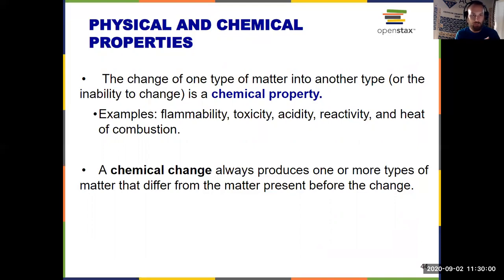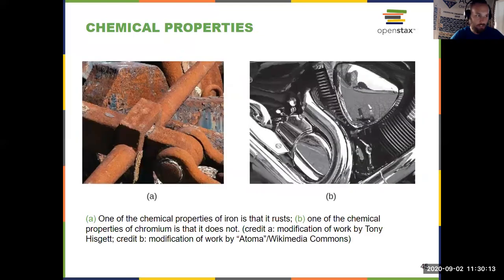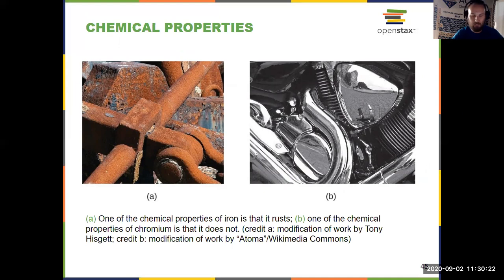For a chemical property, always think to yourself: is there a chemical change? Because that's going to produce some type of matter that's different than what you started with. Rusting, for example — that's a chemical change. It formed something new that wasn't there before, and it's probably happened to some extent on the bottom of your car.